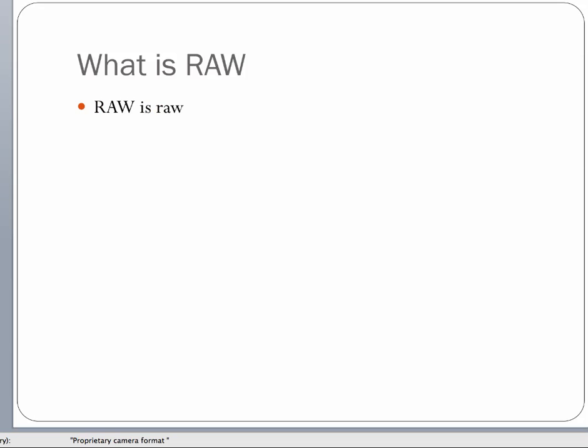RAW means that it is unprocessed information in the camera — whatever comes in is what you get out. Each manufacturer has their own format for RAW. As you saw in the images before, the Nikon format is called NEF, and Canon has something called CR2. The information needs to be processed into your computer using a converter that converts the data from RAW to whatever format you want to use.